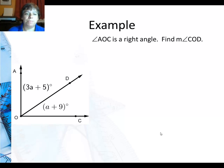So let's look at our example. Angle AOC is a right angle, and we want to find angle COD. Well, I know it's a right angle, so I should just put the two angles together and add them. So there they are. 3A plus 5 plus A plus 9 equals 90 degrees.